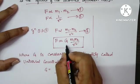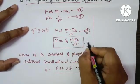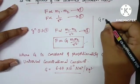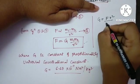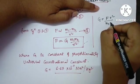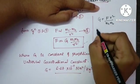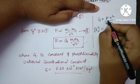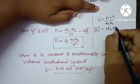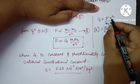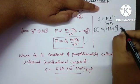From here I want to explain the dimensional formula of G. From this equation we can write G = F r square upon m1 m2. So dimensions of G are: dimensions of F, that is force, M L T^-2, and here r is the distance between the two masses.